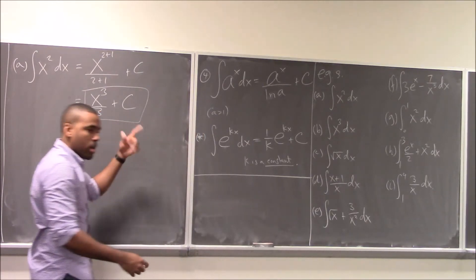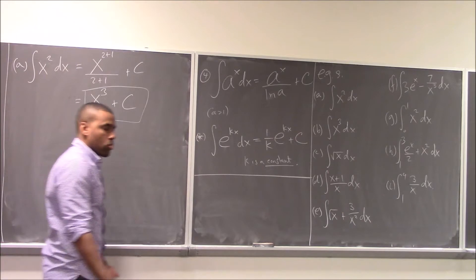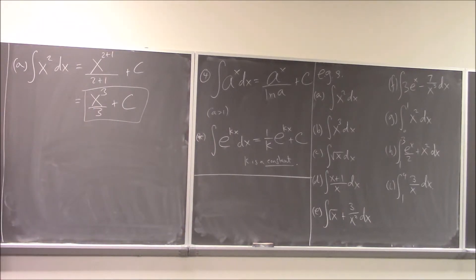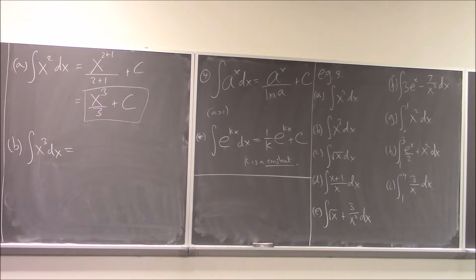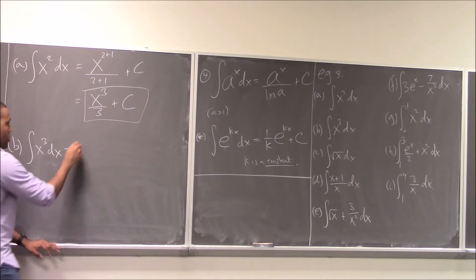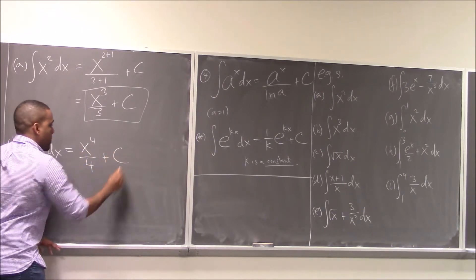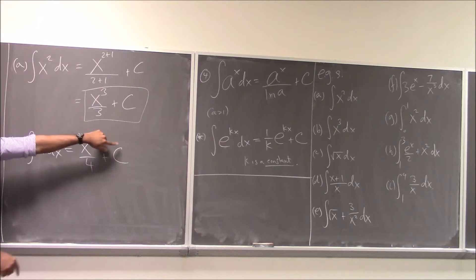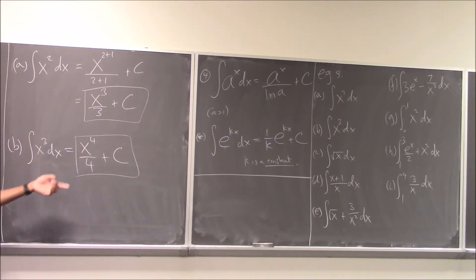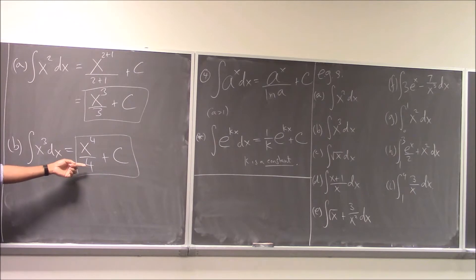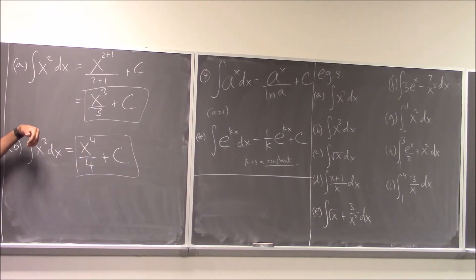For the integral of x³: x⁴/4 plus C — the plus C is very important when there are no numbers on the integral. We add 1 to the power and divide by the new power. You can check by differentiating: factor out 1/4 and differentiate x⁴ to get x³. For the integral of √x: rewrite √x as x^(1/2) first. Now it fits the power rule, giving x^(1/2 + 1) over (1/2 + 1) plus C, which simplifies to x^(3/2) over (3/2) = (2/3)x^(3/2) plus C.